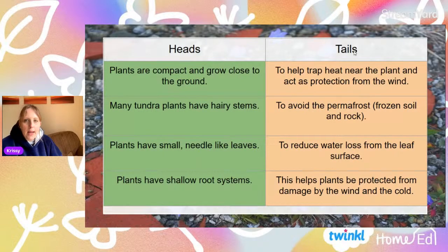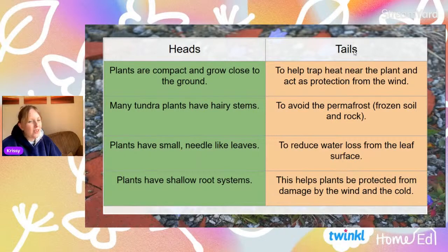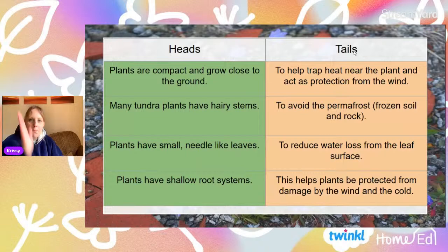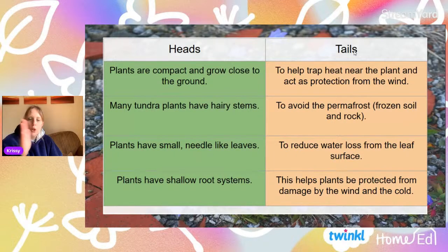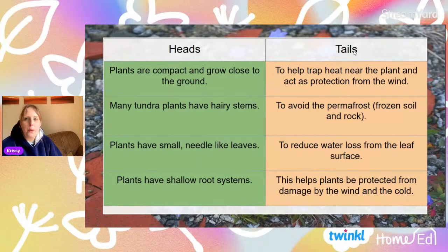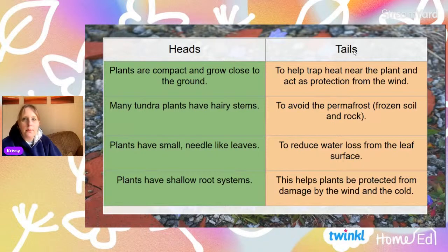Plants are compact and grow close to the ground to help trap heat near the plant and act as protection from the wind. Can you match the heads to the tails? Which two things work together? Many tundra plants have hairy stems — which tail matches that? You've got 30 seconds. Off you go.